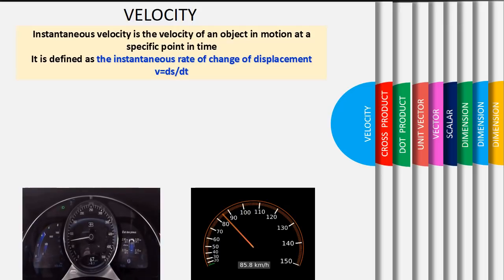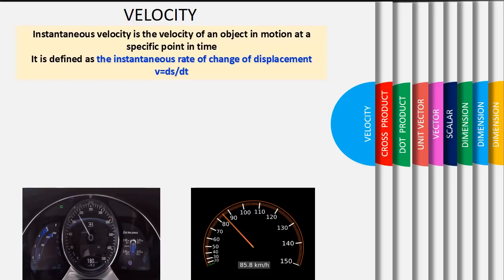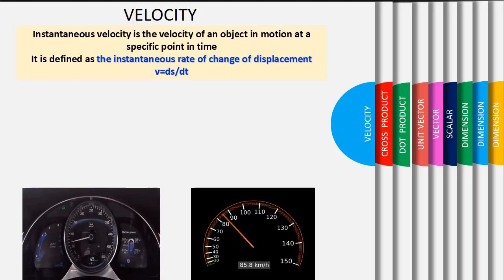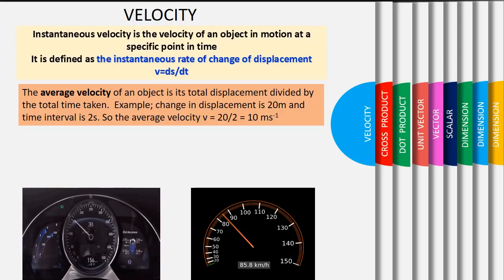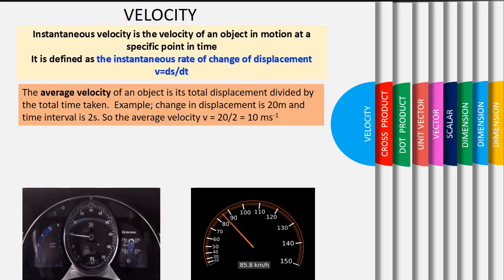Instantaneous velocity is the velocity of an object in motion at a specific point in time. It is defined as the instantaneous rate of change of displacement, v equivalent to ds over dt.